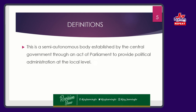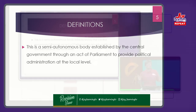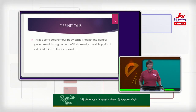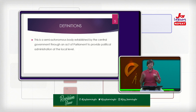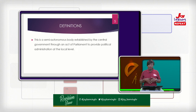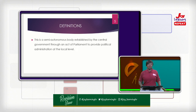The third definition: local government is a semi-autonomous body established by the central government through an act of parliament to provide political administration at the local level. It is an opportunity given to local people at the grassroots to be able to administer governance by themselves. In one way or another, it helps the people acknowledge that they are part of the governance system — not that government is so far away. They are somehow independent, yet monitored and supervised by other bigger bodies or the central government, so that they do not go out of line or go unconstitutional.